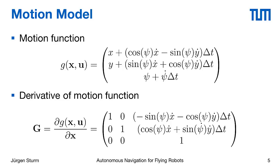This is clearly non-linear because we have sine and cosine in the motion function. To run the EKF we need to linearize this motion function. As shown in the previous video, we compute the derivative of the motion function with respect to our current state. This gives us a 3×3 matrix where the columns correspond to derivatives with respect to x, y, and psi, and the rows correspond to the successor state in x, y, and psi. There is also an exercise where you derive this yourself.